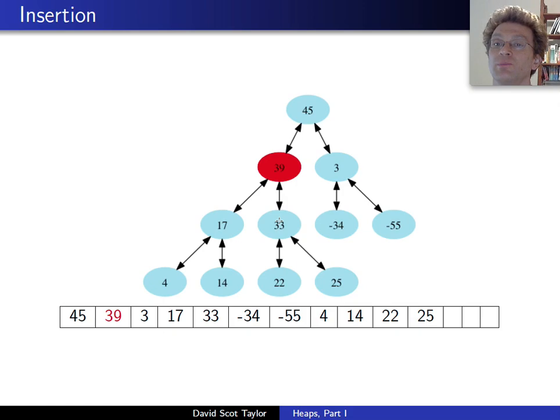I'm going to swap it with its parent. I'm just going to keep on moving it up the heap until finally, 39 compares to 45. 39 is smaller than 45. So we're done. We look good. That's pretty much how you insert. The fact that you know exactly what the heap is going to look like after insertion helps you.